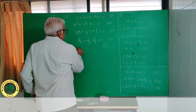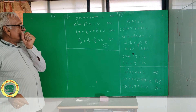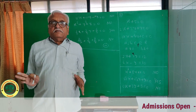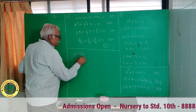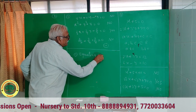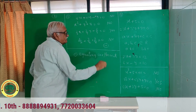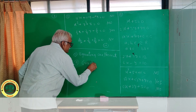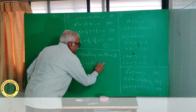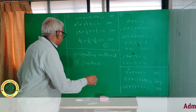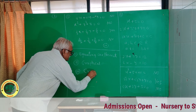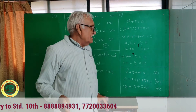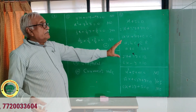Now we see how to solve simultaneous equations. There are three methods. The first method is the equating coefficient method. The second method is graphical. The third method is the substitution method. We will look at the first method — equating coefficient method.